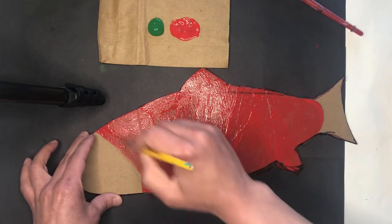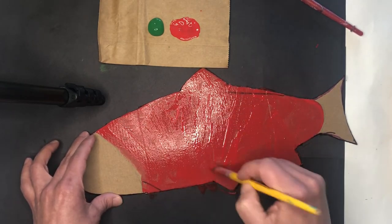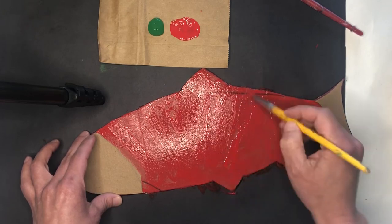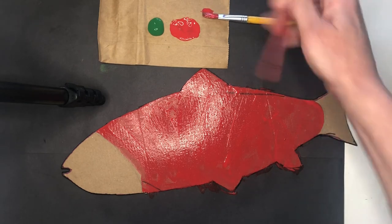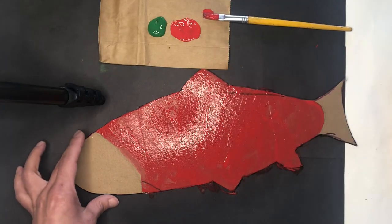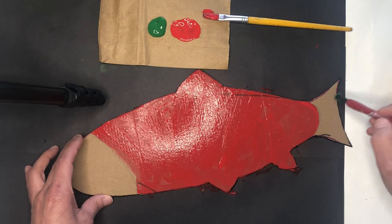I had some marks on this cardboard that are kind of showing through. You could do a couple coats of paint. All right, now I'm going to move on to my green. And that's for my tail.